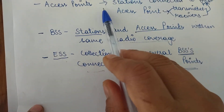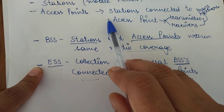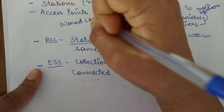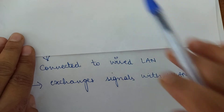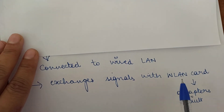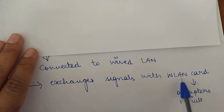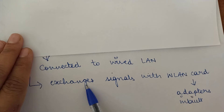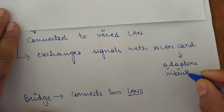The access points are further connected to your wired LANs. These access points can exchange signals with the wireless LAN card, so you must have an inbuilt wireless LAN card inside your nodes, whether it is a mobile or a laptop. These wireless LAN cards are nothing but adapters which are inbuilt inside your devices.